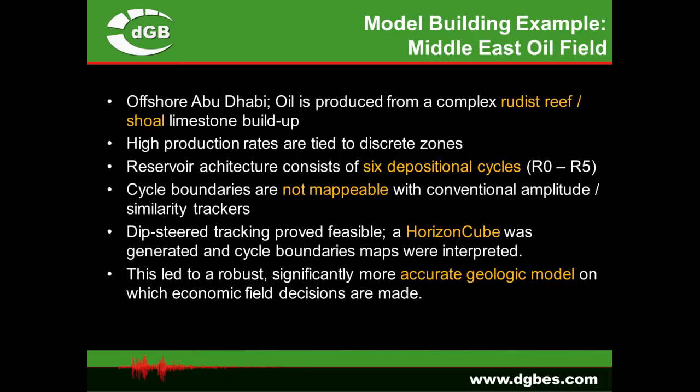The first example is from offshore Abu Dhabi — an existing oil field. It's a rudist reef shoal limestone buildup complex with high production rates tied to certain discrete zones. The reef complex has been decomposed into six depositional cycles based purely on well data and core information. The cycle boundaries were not mappable on conventional seismic amplitude and similarity trackers, but we were able to compute a HorizonCube from the dip field, allowing us to come up with a much more accurate geologic model on which all economic field decisions are now based.